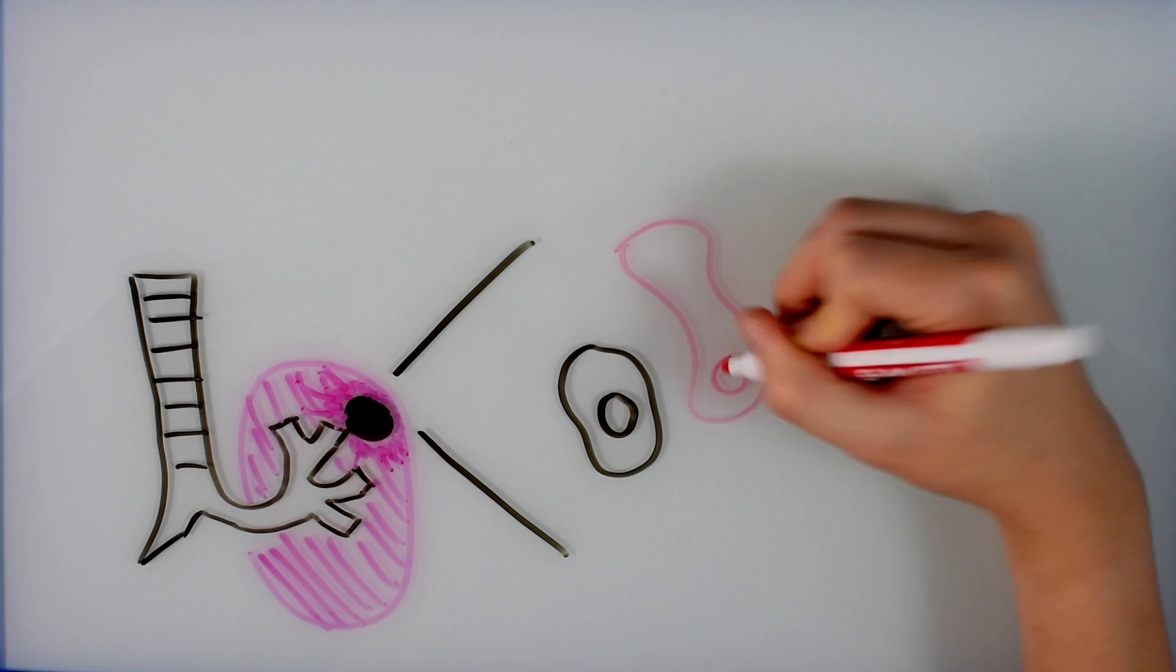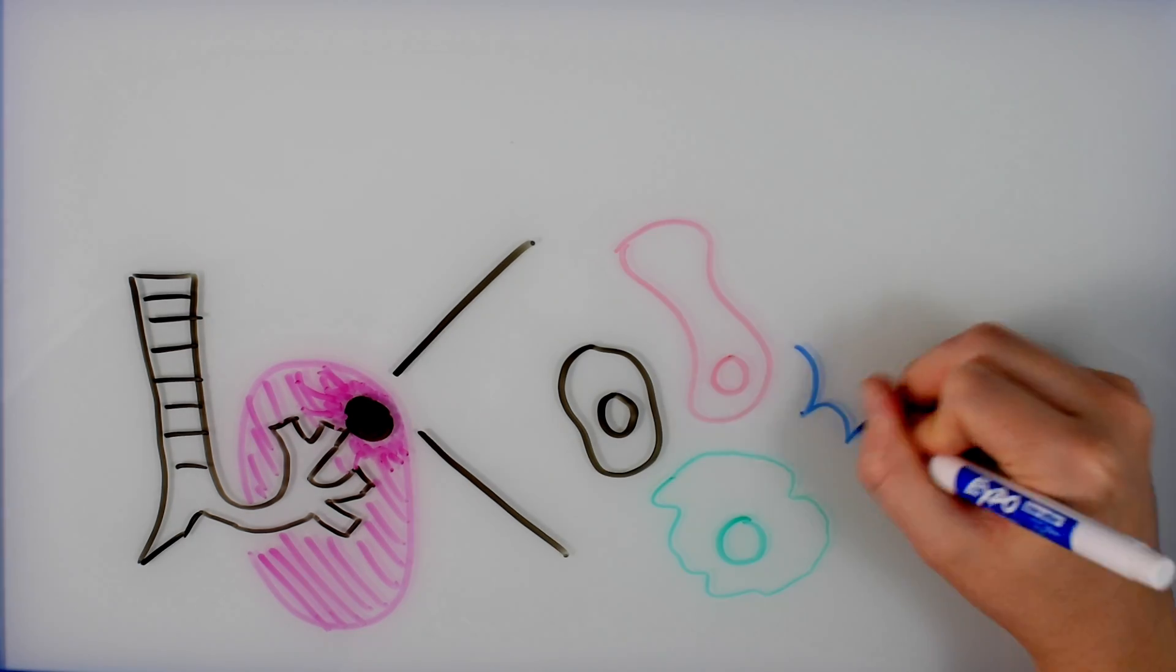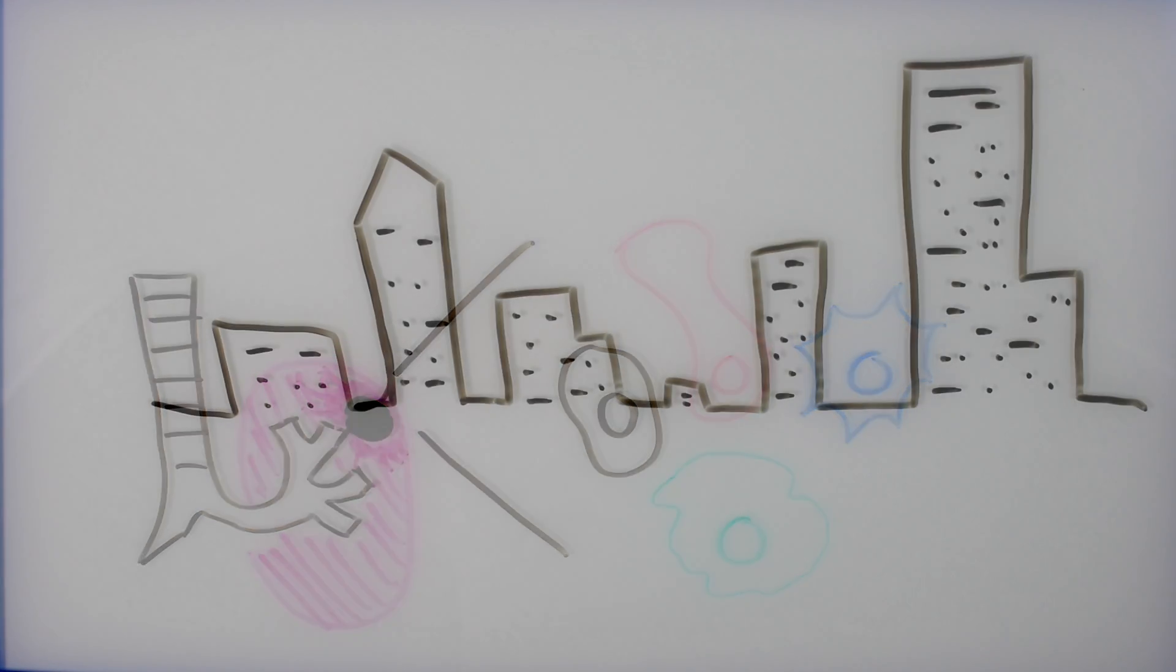Before I delved into the science of cancer, I used to picture a tumor as one solid piece made up of one kind of cell, the cancer cell. But cancer is less like a solid entity and more like an ecosystem. It's made up of a variety of different cells all working together, kind of like a little city.